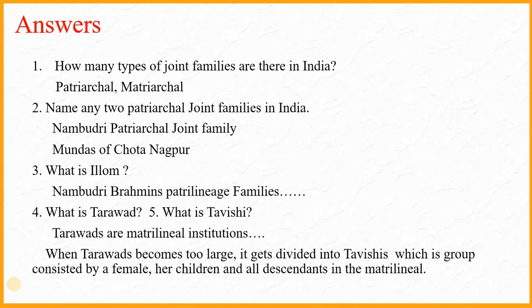The next question was: What is Tarawad? Tarawads are matrilineal institutions — give the complete definition. The last question was: What is Tavishi? The answer is that when Tarawads became too large, they got divided into Tavishis, which are groups consisting of a female, her children, and all descendants in the matrilineal line.